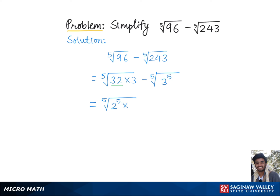We already have times 3 minus 3 to the 5th can be pulled out of the 5th root as 3, and 2 to the 5th can be pulled out of the 5th root as 2.